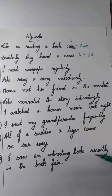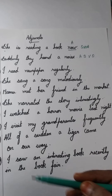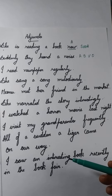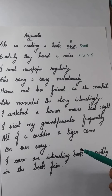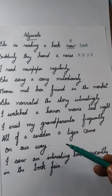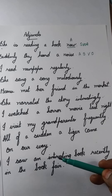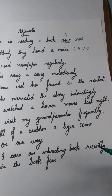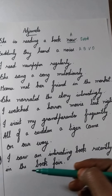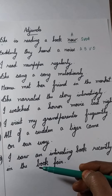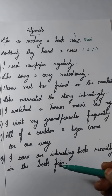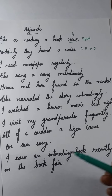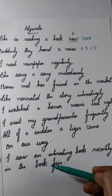I saw an interesting book recently in the book fair. 'Saw' is the verb. Who does the act of seeing? I — so 'I' is the subject. What did I see? I saw an interesting book — so 'an interesting book' is the object. Note: you should not segregate 'interesting' separately and call it an adjunct. When did you see it? I saw it recently — so 'recently' is an adjunct. Where did you see it? I saw it in the book fair — so 'in the book fair' is another adjunct. This answers when and where respectively. The sentence pattern is S-V-O-A-A.